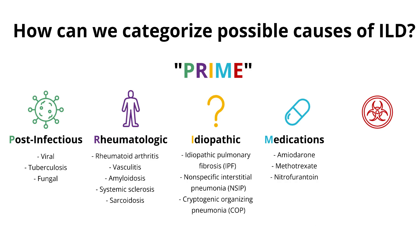And lastly, number five: environmental exposures. There are a ton of different exposures to ask your patients about, but some big ones to remember include birds, asbestos, silica, coal, and tobacco.